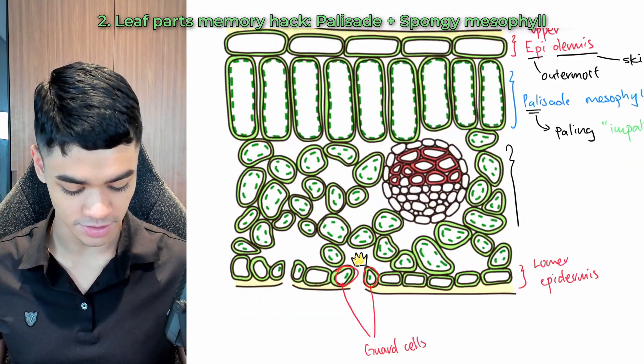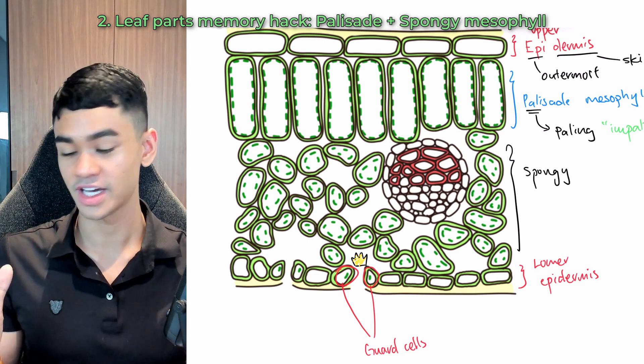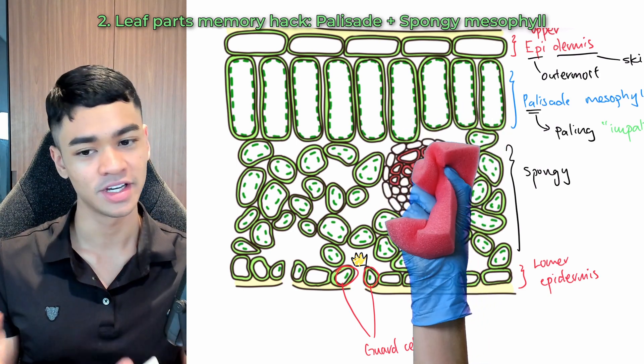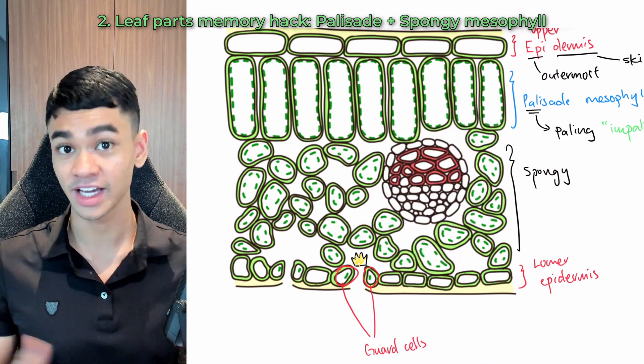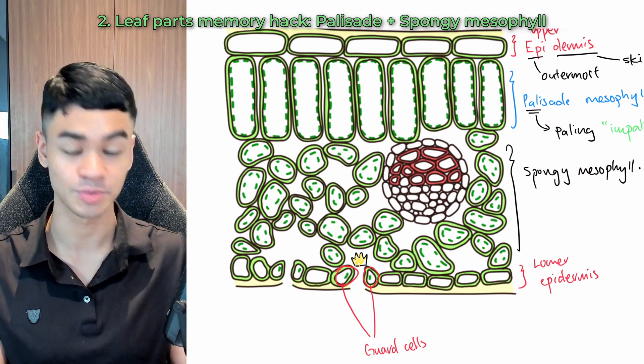And then as for this layer, it's called spongy mesophyll. Why? Because a sponge has airspaces inside. That's why when you squeeze it, it's squishable, right? And same for the spongy mesophyll. There are airspaces and that's why it's like a sponge. So that's how you memorize palisade mesophyll and spongy mesophyll.